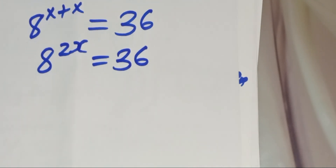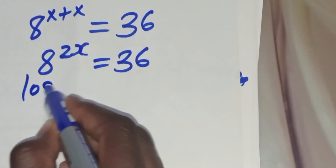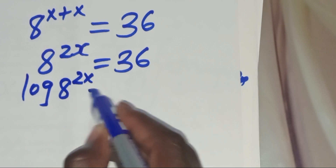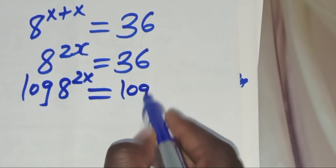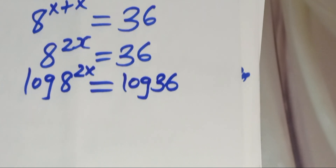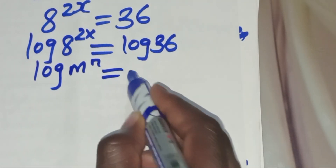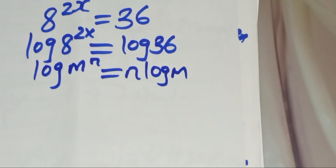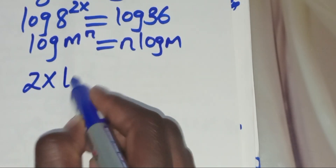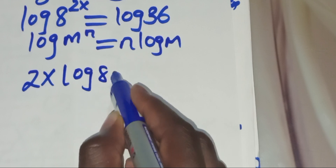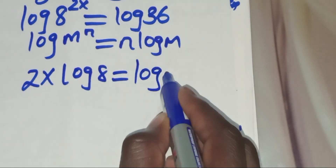Now, to solve for the value of x, we introduce the natural logarithm on both sides, so that we'll have log 8 to the power 2x equal to log 36. Now log 8 to the power 2x is in the form of log m to the power n, which you can express as n log m. Applying this power rule property, log 8 to power 2x becomes 2x log 8, and this is equal to log 36.